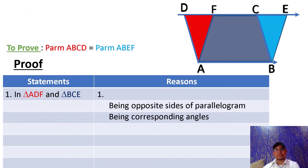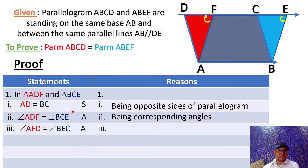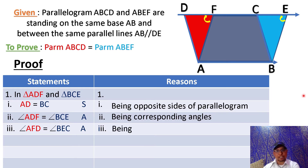Now in statement three, you see in the picture that angle AFD equals angle BEC. So in statement three, we can write angle AFD equals angle BEC. How are these two angles equal? Of course, these two angles are again corresponding angles. So the reason is being corresponding angles.